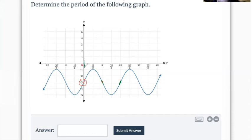So it takes from 0 to 2 pi. So this is the horizontal distance it takes for this trig function to complete one full cycle. So the answer to this question, finding the period, would be 2 pi.